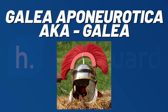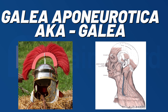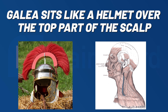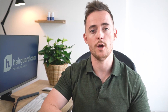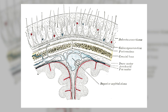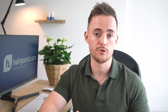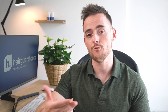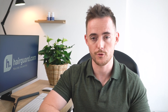Galea was Latin for helmet. And by looking at this illustration, you can see how the galea got its name. It basically sits like a helmet over the top part of the scalp, located underneath the skin, sandwiched between the overlying skin and the skull. It's connected to the skin through a layer of dense connective tissue. The galea is connected in the front to the frontalis muscle and in the rear to the occipitalis muscle, and on either lateral side of the head over the ear area it is flanked by other muscles.